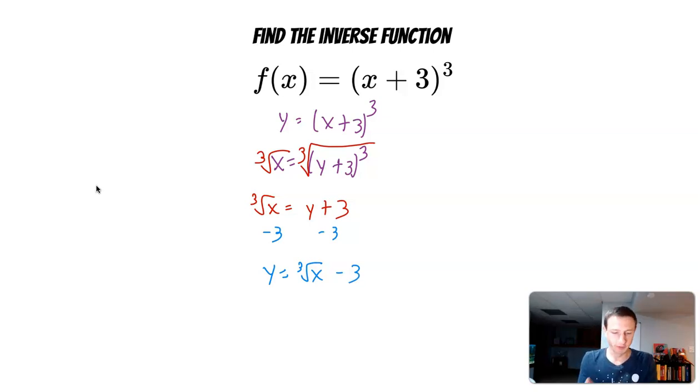When you're done, so we've solved for y. We want to replace y with the inverse. So we want to replace it with f inverse of x equal to the cube root of x minus 3. And there it is. We get the inverse of the cube root of x minus 3.